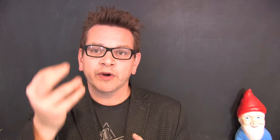Let's take a look at the words. Section 1: 'Neither slavery nor involuntary servitude, except as a punishment for crime whereof the party shall have been duly convicted, shall exist within the United States, or any place subject to their jurisdiction.' Section 2: 'Congress shall have power to enforce this article by appropriate legislation.'